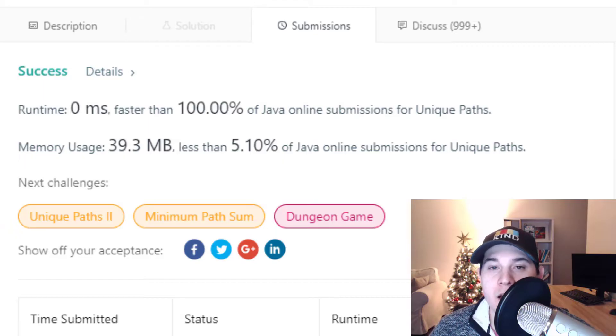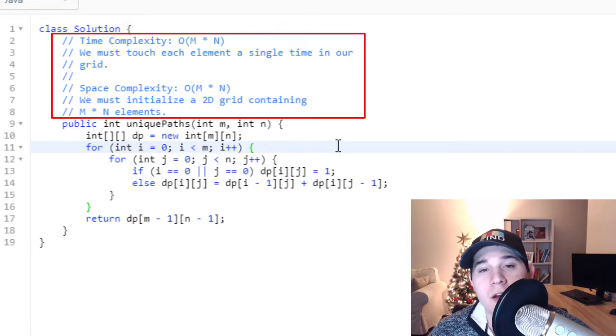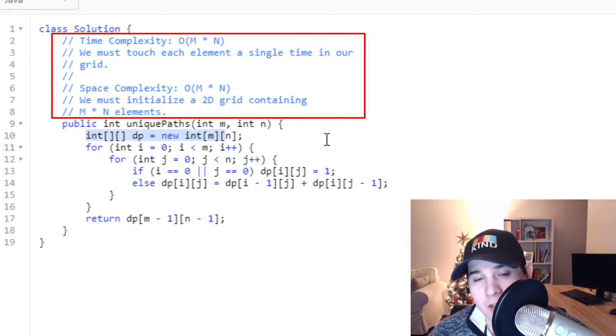So next I'll go over the time and space complexity. The time complexity is going to be m times n because we have to iterate over all of our grid and touch every element a single time. Our space complexity is also m times n. On line 10 we have to initialize this 2d dp array containing m times n elements.